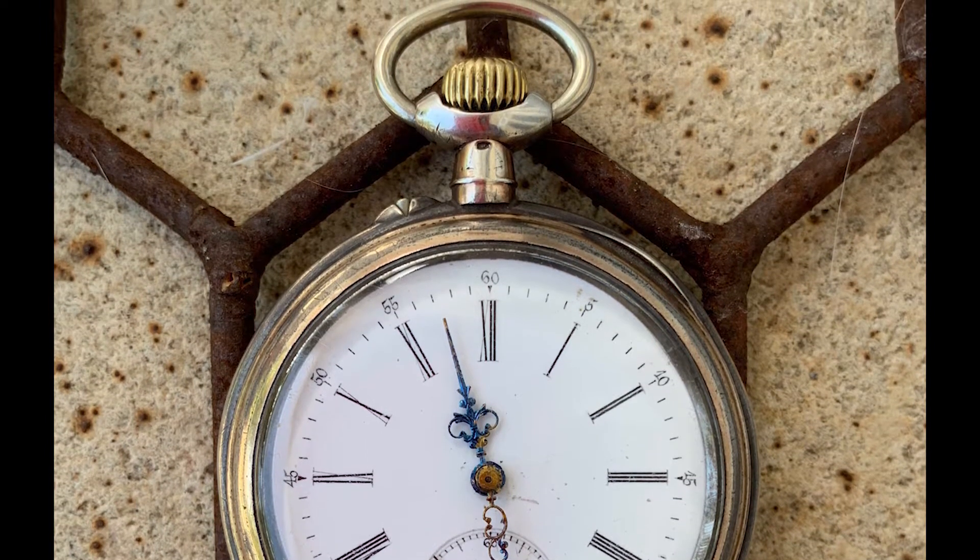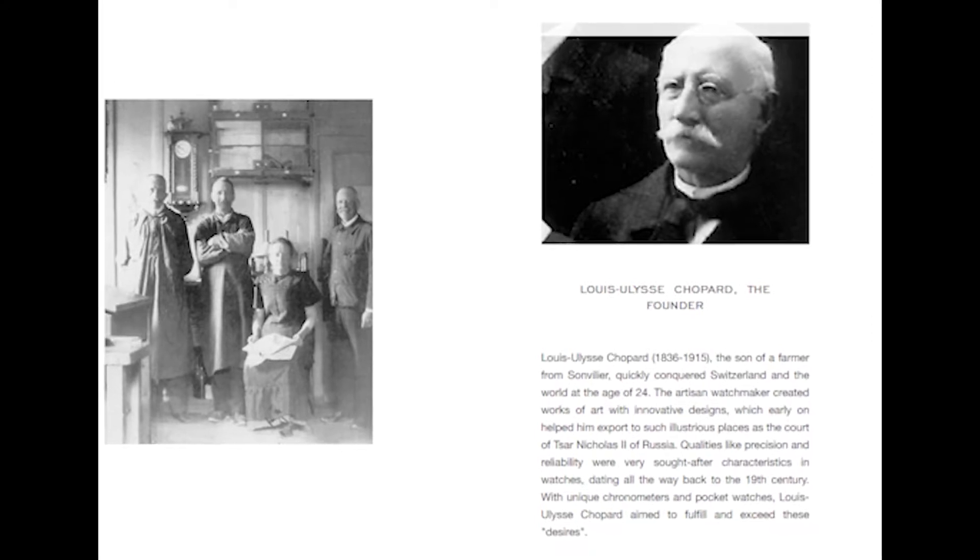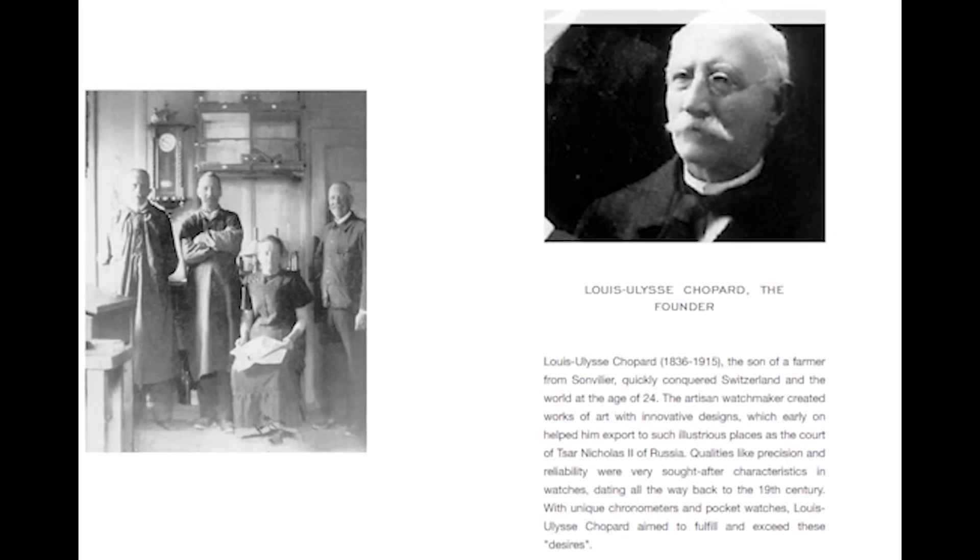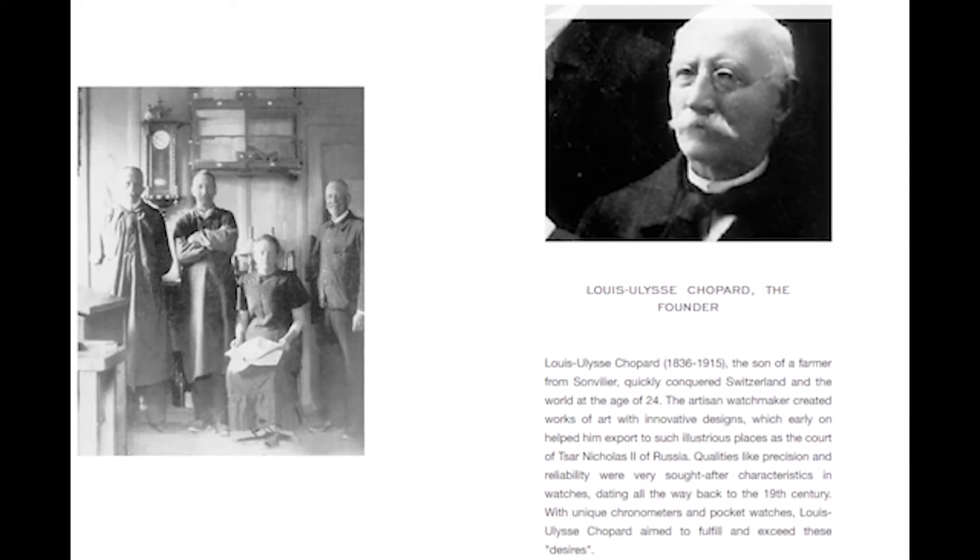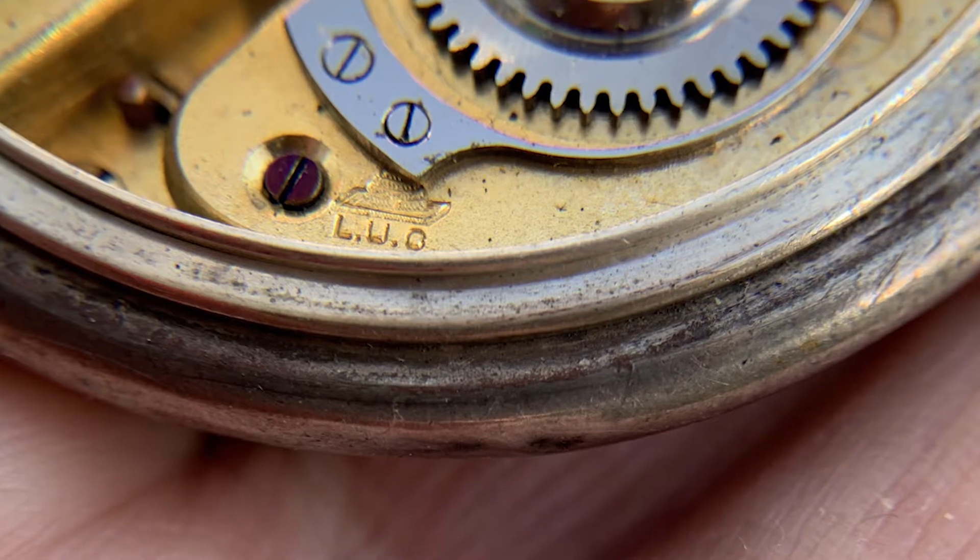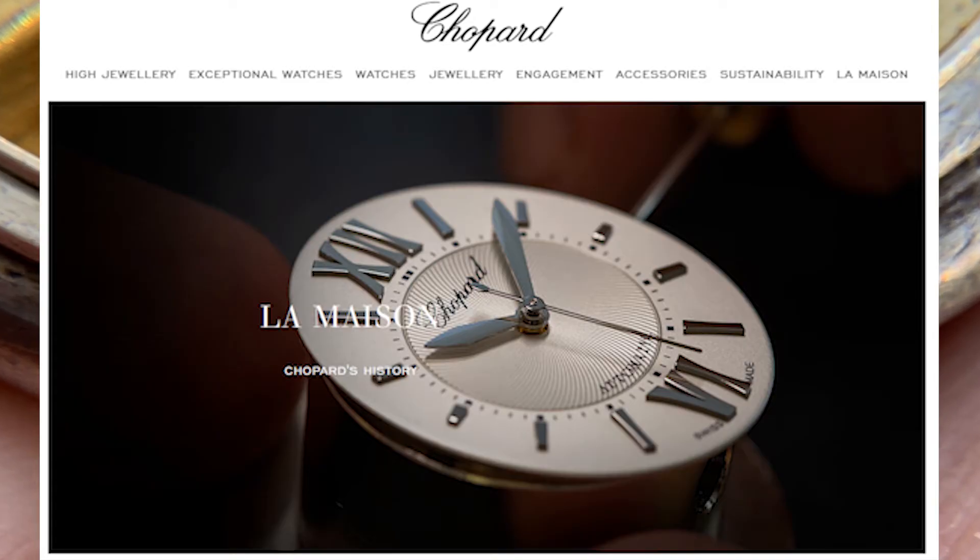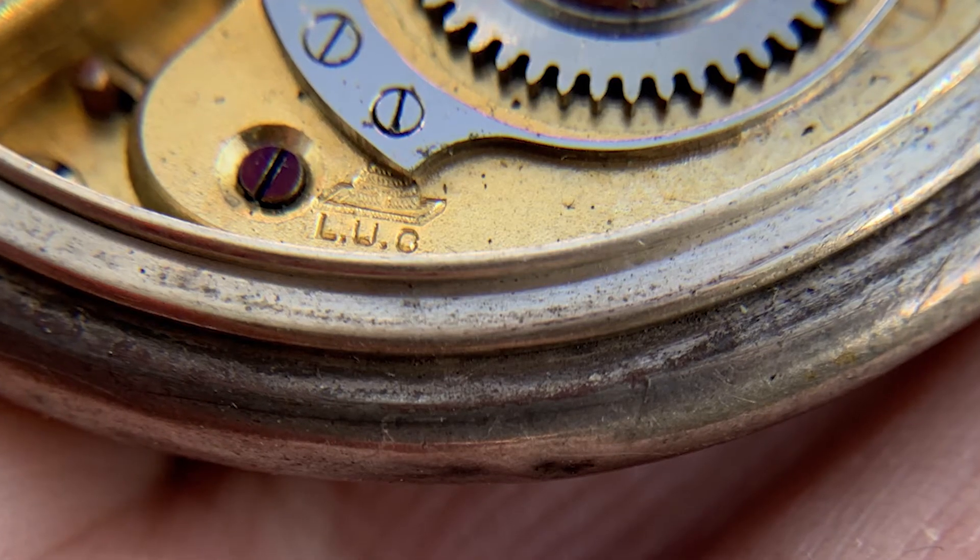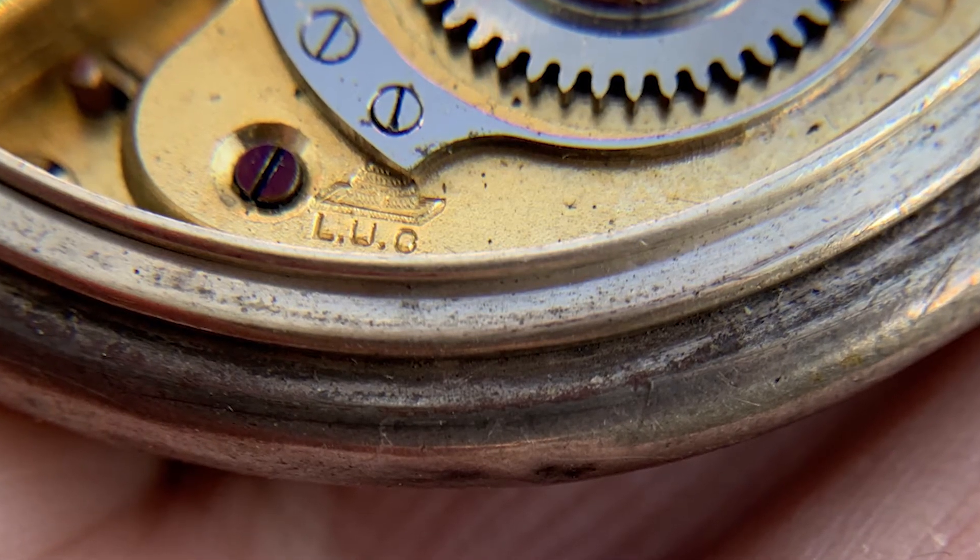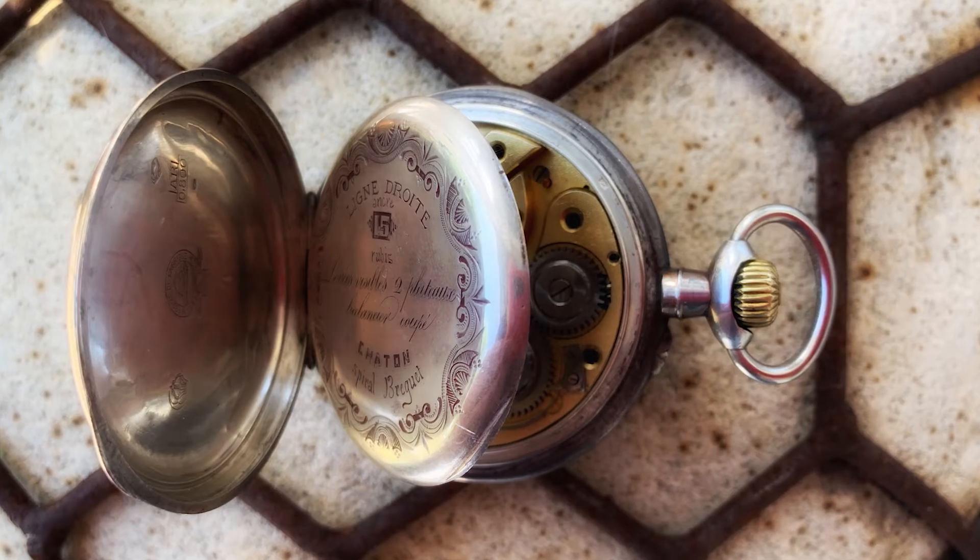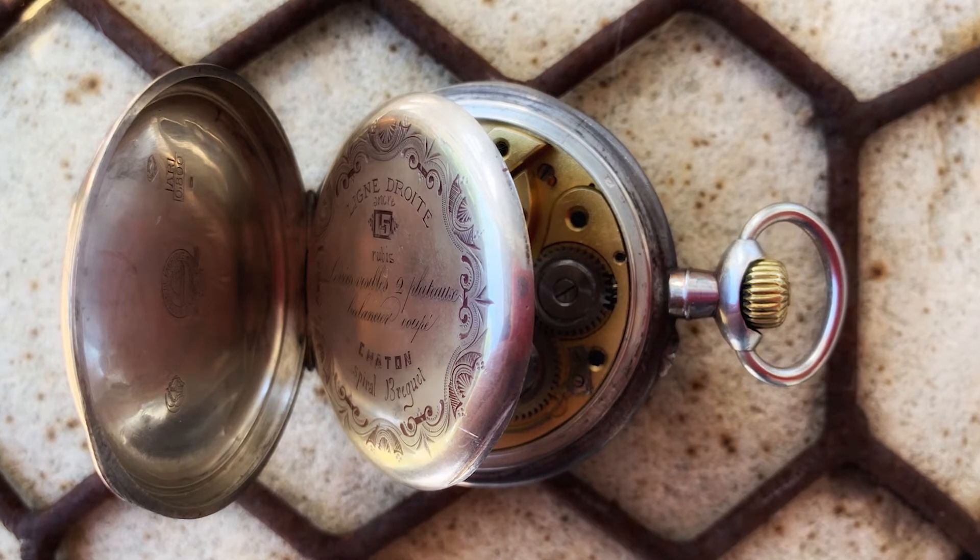But anyway, here's some information on the watch. Turns out it's a Louis Ulysse Chopard watch that is marked L-U-C, and I think that was the predecessor or an early version of the Chopard that you hear about now. They've always been a fairly premium watch. Louis was born in 1836 and died in 1915, but this watch is probably from around 1910, near as I could tell.